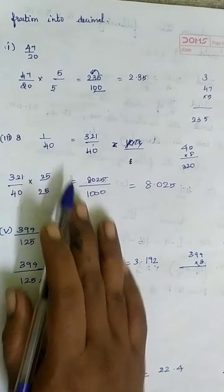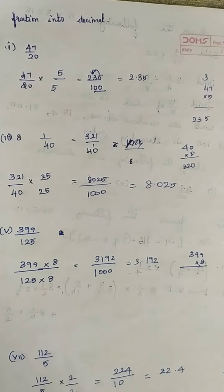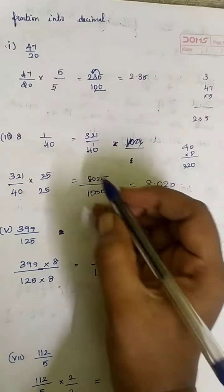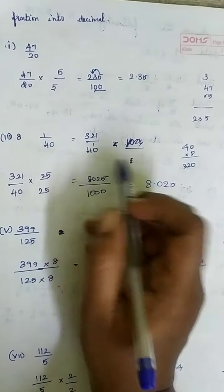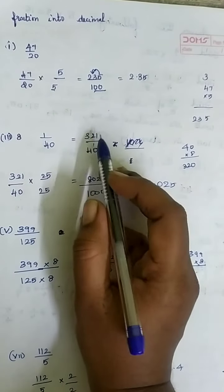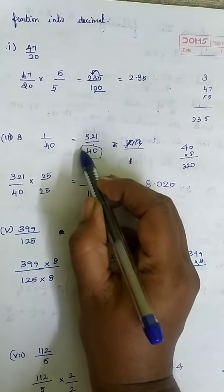Third subdivision: 8 and 1 by 40. It is a mixed fraction. So now how are we going to do it? 8 into 40 is 320, plus 1 is 321. So it is 321 divided by 40.